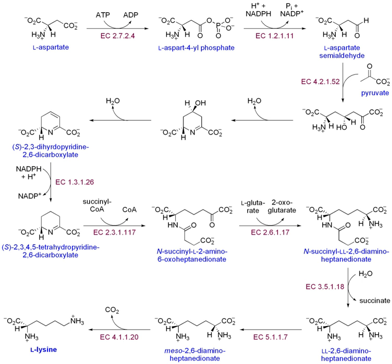Severe combined immunodeficiency (SCID) is characterized by a loss of T cells. Shortage of these immune system components increases susceptibility to infectious agents because affected individuals cannot develop immunological memory. This disorder results from a deficiency in adenosine deaminase activity, which causes a buildup of dATP. These dATP molecules inhibit ribonucleotide reductase, which prevents DNA synthesis. Huntington's disease is a neurological disease caused from errors that occur during DNA synthesis. These mutations lead to the expression of a mutant Huntington protein, which contains repetitive glutamine residues encoded by expanding CAG-trinucleotide repeats in the gene. Huntington's disease is characterized by neuronal loss and gliosis, with symptoms including movement disorder, cognitive decline, and behavioral disorder.